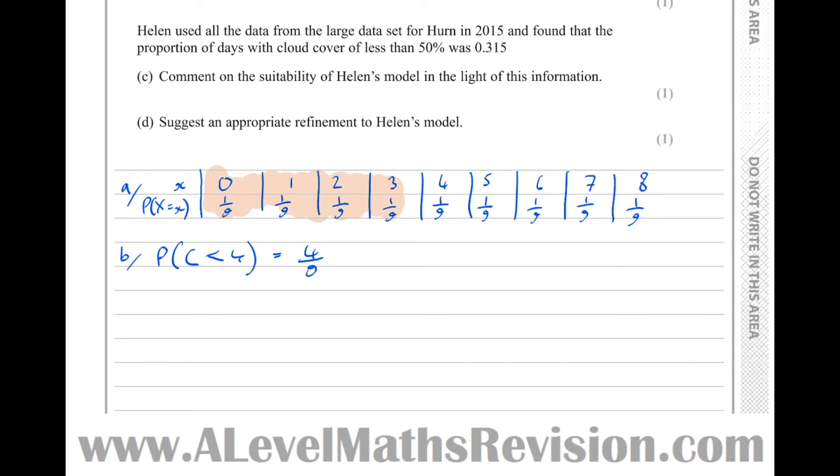Okay, so it says Helen used all the data from the large data set for Hearn in 2015 and found that the proportion of days with cloud cover of less than 50% was 0.315. Comment on the suitability of Helen's model in light of this information. So if the model was a good one, this prediction of four ninths or 0.4 recurring would be similar to 0.315, but it's not.